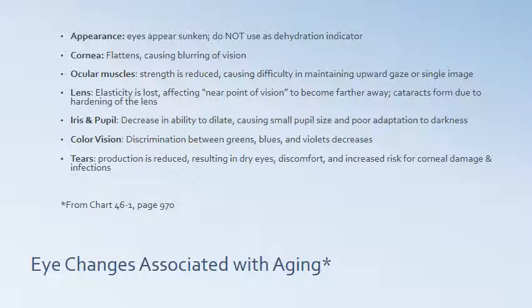Color vision changes in the elderly — discrimination between greens, blues and violets decreases. The production of tears is also reduced, which can result in dry eye syndrome. It's very uncomfortable and causes an increased risk for corneal damage and infections.